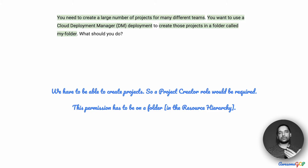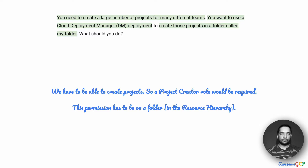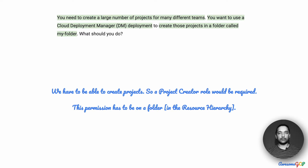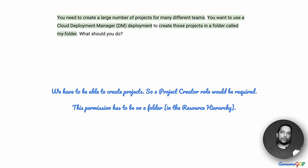Even when I was reading this question, I was trying to map out what we will need as part of the answer. One, we have to be able to create projects — somebody needs to have a project creator role. And this role has to be on the folder. Now remember, when we say folder here, we are talking about a folder in the resource hierarchy: organization, multiple folders, then projects, then resources like VMs, memory, and hard disk. So this is not a regular folder. The resource here is the folder on which this permission needs to be available.